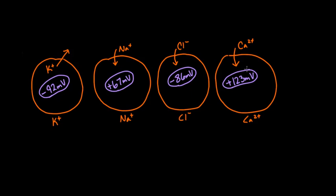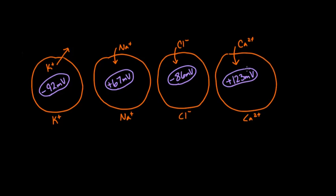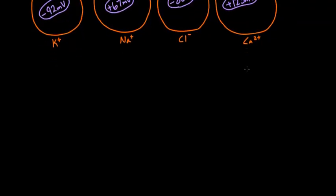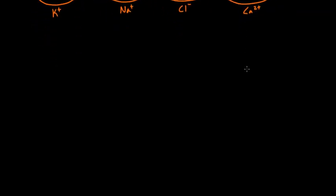Now we know that these are the resting potentials for each individual ion. But what is the potential for a cell, a real cell? We're not actually using a real cell as an example because real cells are permeable to multiple ions.